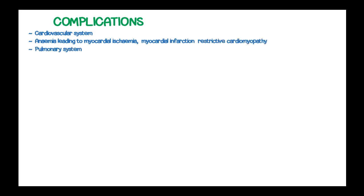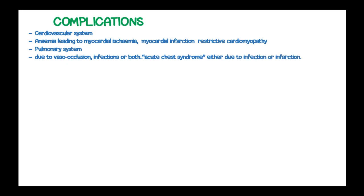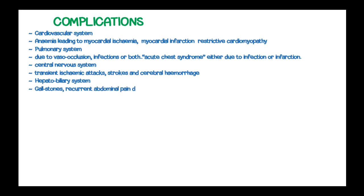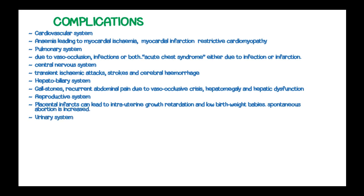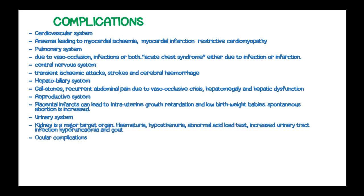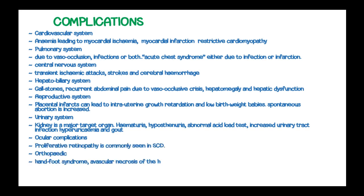Complications from sickle cell disease affect almost every organ system. In the cardiovascular system, anemia leads to myocardial ischemia and myocardial infarction. In the pulmonary system, vaso-occlusion, infections, or both can cause acute chest syndrome. In the CNS, there may be transient ischemic attacks, strokes, and cerebral hemorrhage. Gallstones, recurrent abdominal pain due to vaso-occlusive crisis, hepatomegaly, and hepatic dysfunction are common. In the reproductive system, placental infarcts lead to intrauterine growth retardation, low birth weight, and increased spontaneous abortion. In the urinary system, complications include kidney failure, hematuria, hyposthenuria, increased urinary tract infections, and hyperuricemia with gout. Musculoskeletal complications include avascular necrosis of the hip, osteomyelitis, and skin ulcers around joints.